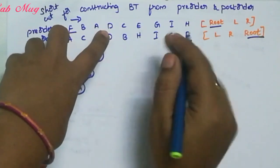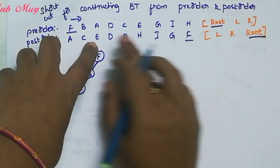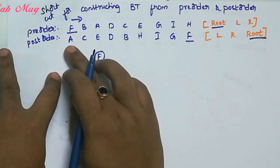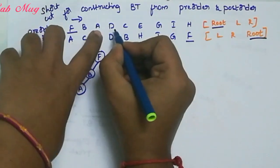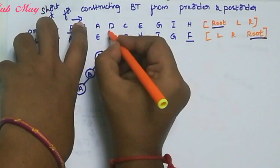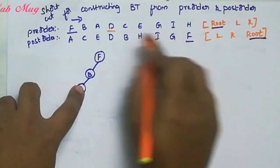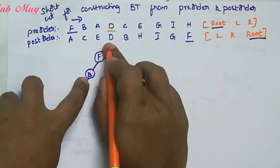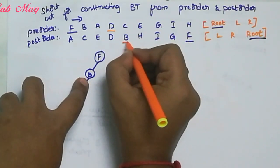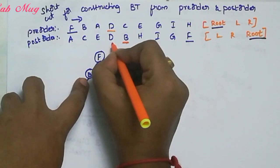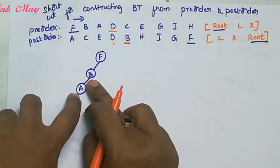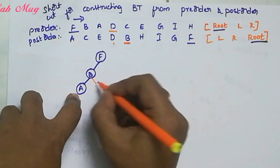The next element is D. F is root element. B is the next root element. D ane edhi B ki left side undhi. But observe chestE, B is already the immediate left element of F. Which means B is the root element, and B's left part is already complete. So D is allotted to the right place of B.